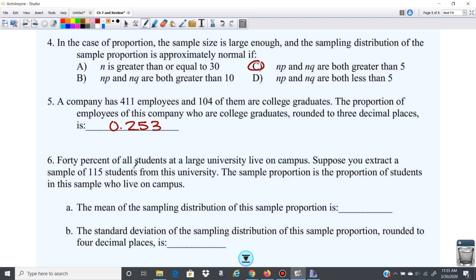Next one, you have 40% of all students at a large university live on campus. Suppose you extract a sample of 115 students. The sample proportion is the proportion of students in the sample who live on campus. So the mean would be 40%. Because remember the mean of the sampling distribution is equal to the mean of the population. So this one would just be 0.40.